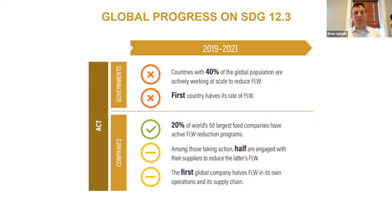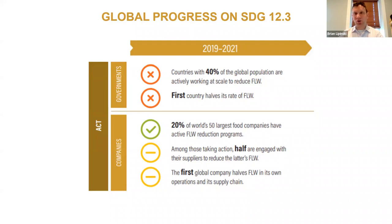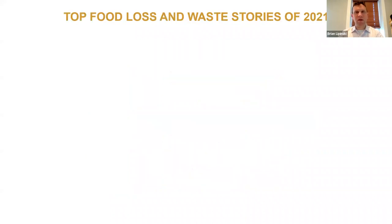On the company side, we do see a bit more action happening. The world's largest food companies actually have active food loss and waste reduction programs, and many are starting to work with their suppliers. This year's progress report, covering the next set of milestones, will be especially notable. We also covered the five top food loss and waste stories of 2021. I'll highlight those now — I encourage you to read the full progress report for more detail.